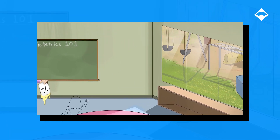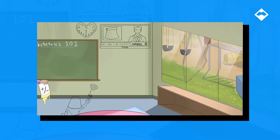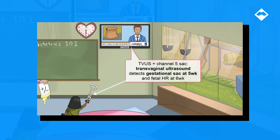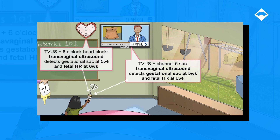Another way to diagnose pregnancy, and something that's used as an adjunct to urine or serum testing, is ultrasound. With a transvaginal ultrasound, an intrauterine gestational sac should be able to be visualized at 5 weeks. By 6 weeks, a transvaginal ultrasound should be able to see a fetal heart rate.